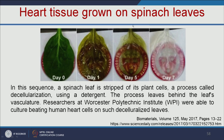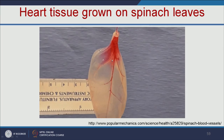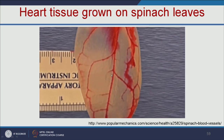Recent research has grown heart tissue on spinach leaves using the same approach. The spinach leaf is stripped of its plant cells through a process called decellularization using a detergent; this leaves behind the leaf's vasculature. Cells were then cultured on top of these decellularized leaves. At day 0 it is a spinach leaf; by day 7, after decellularization, only the vasculature remains. Scientists used this as a scaffold and grew beating human heart cells on the decellularized leaves. The plant leaf vasculature acts like blood vessels for growing heart cells on this leaf scaffold.